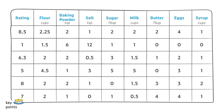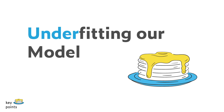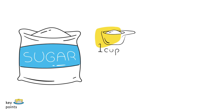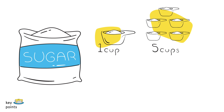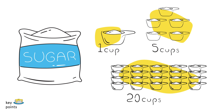Let's think about this in terms of our hypothetical pancakes data frame and what happens when we use a decision tree model. If we underfit our model, we might have a split like less than one cup of sugar and one or more cups of sugar. But there's a huge difference between one cup of sugar, five cups of sugar, or twenty cups of sugar.